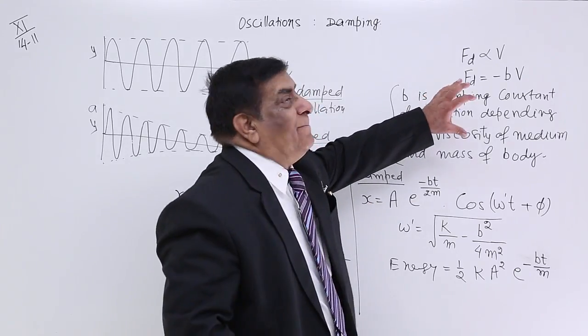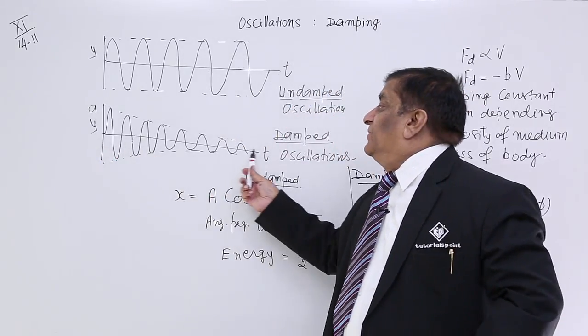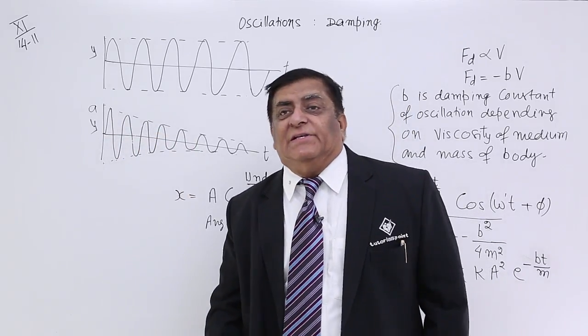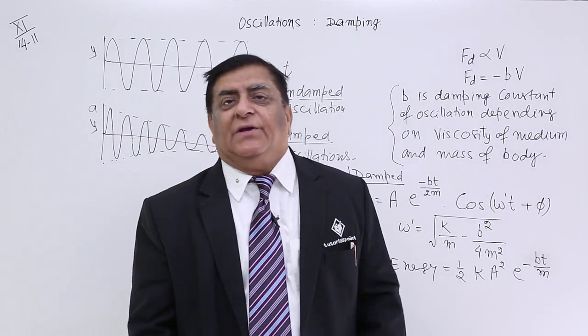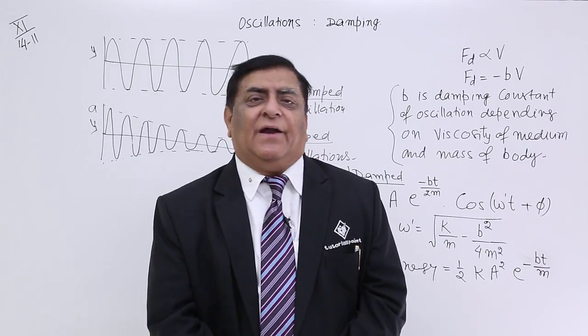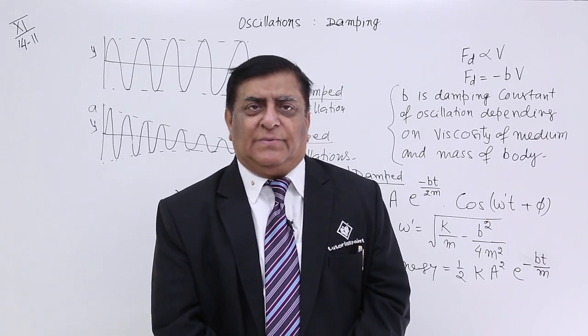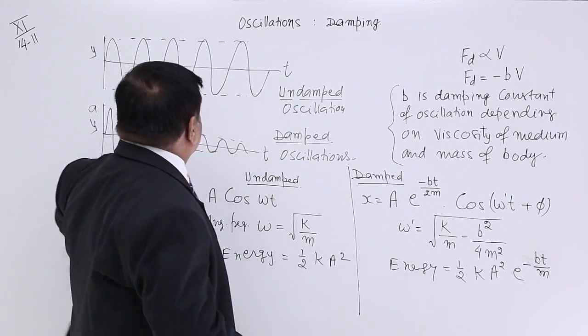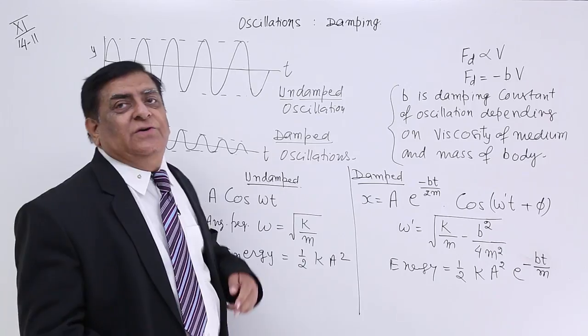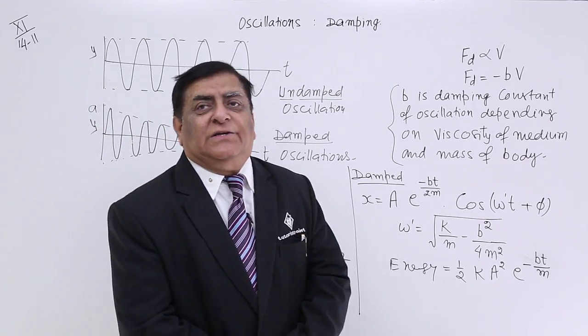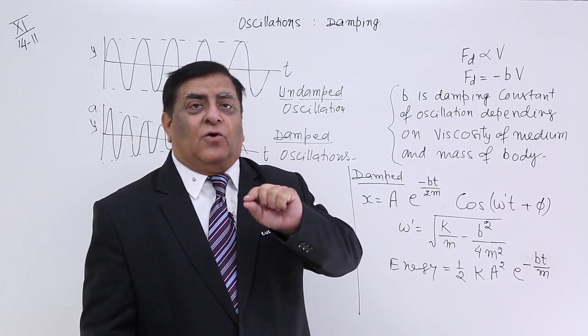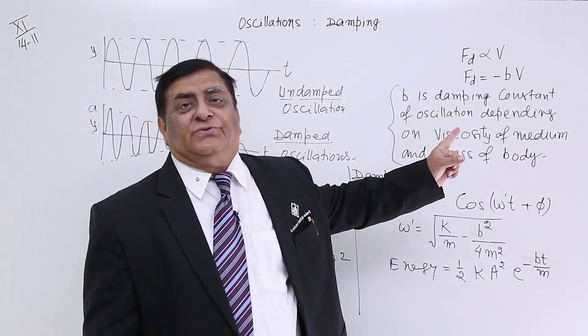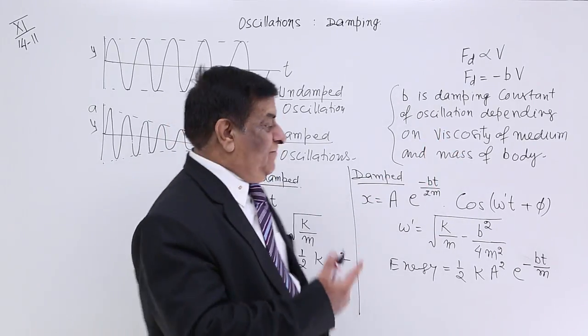And this is force per unit velocity. Now, B is damping constant of oscillation depending upon viscosity of medium and mass of the body. Now, when this damping is happening, we take the oscillation according to this. The displacement goes on decreasing. The amplitude goes on decreasing. This is damped oscillation and after some time it will stop.